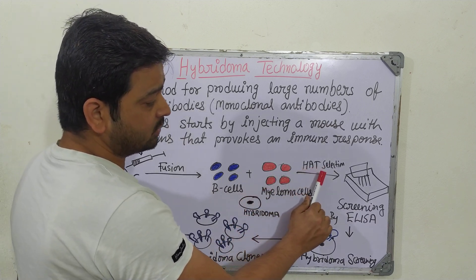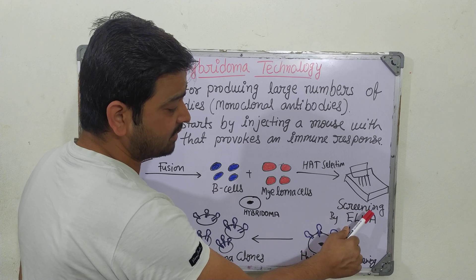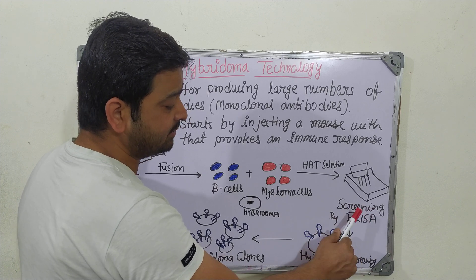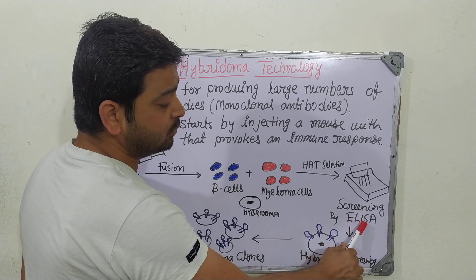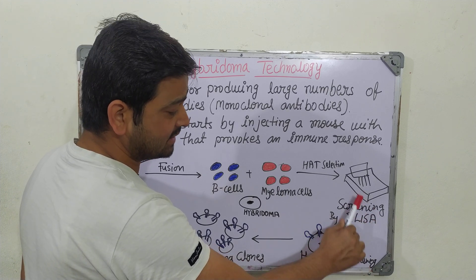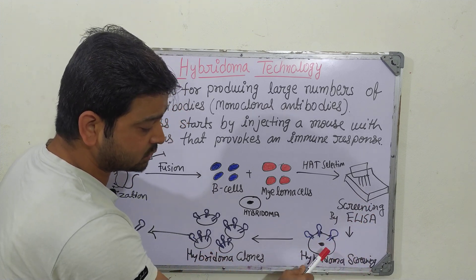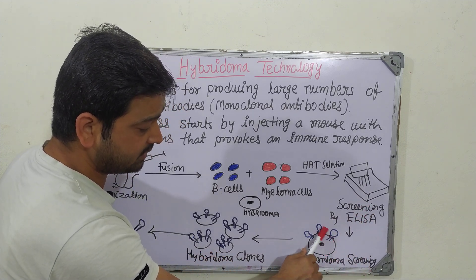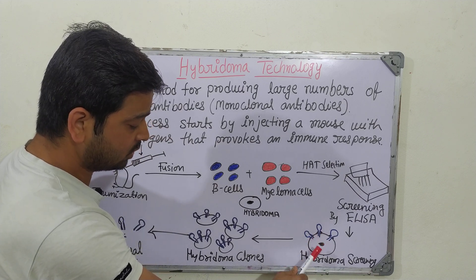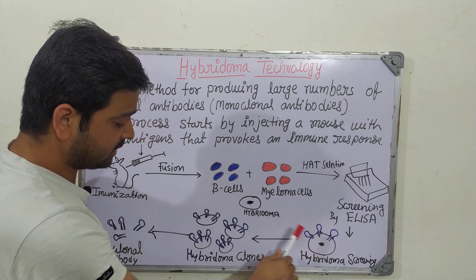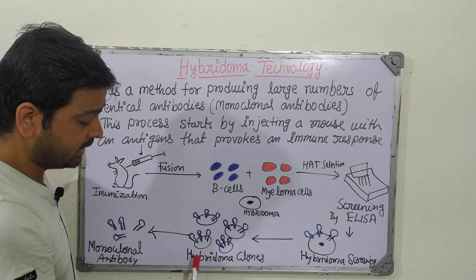We then perform HT selection and screening by ELISA — the enzyme-linked immunosorbent assay — to screen the hybridoma. This identifies which hybridoma clones will produce the particular types of antibodies we are looking for.